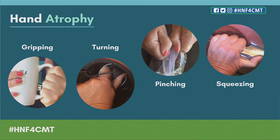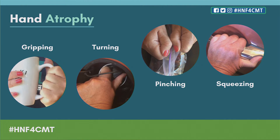In the upper extremity, there are issues with fine movements in the hands. Gripping is relatively preserved in our experience, but fine movements requiring pinching — such as unsealing a bag, fastening a necklace, or buttoning a shirt — are often impaired. There are good occupational therapy approaches to help with this, and that's an important part of current CMT management.